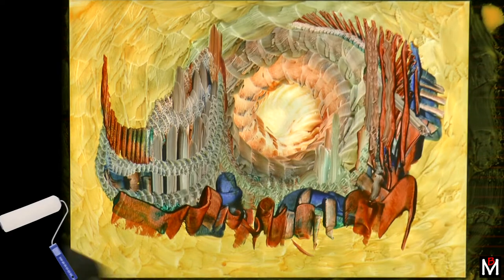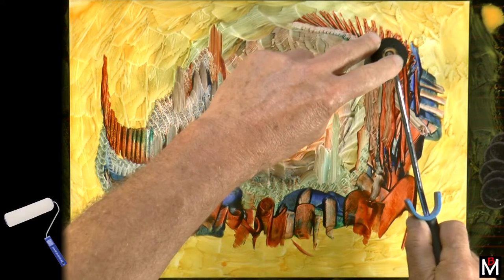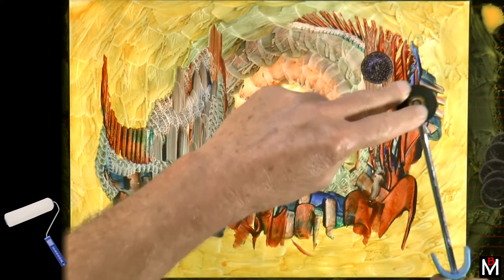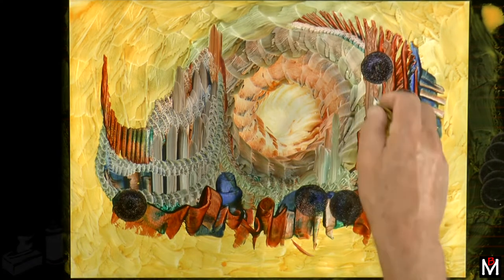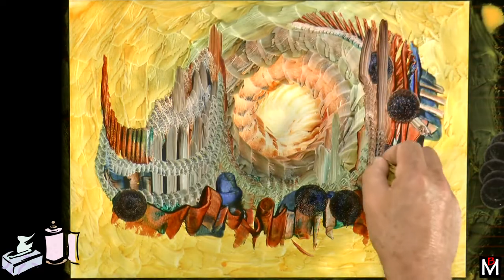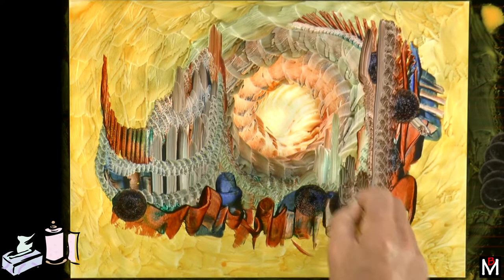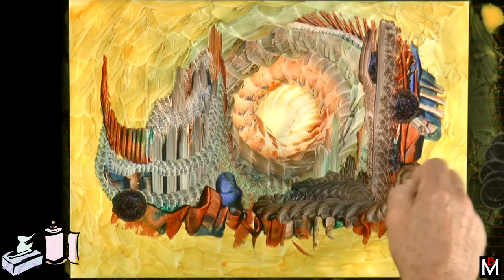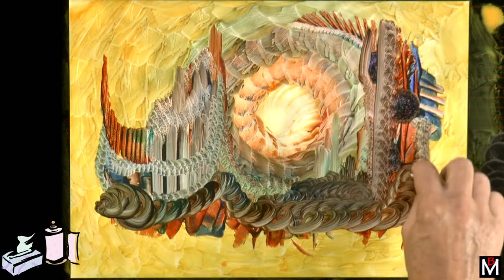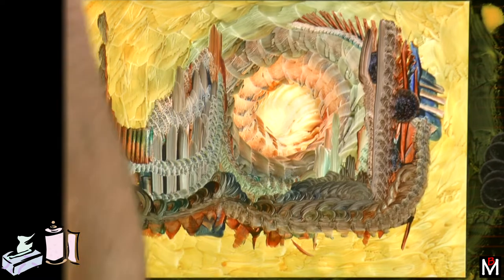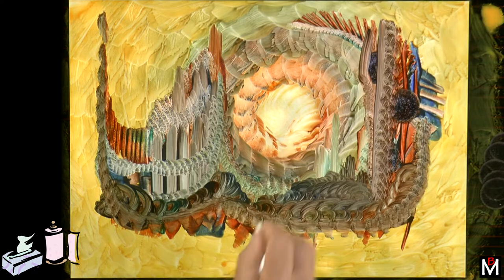Now this is a sponge roller, 100 millimeters or four inches long, and I'm just using it to apply some darker color - just pressing down the round end of that roller and then working those colors into the image.